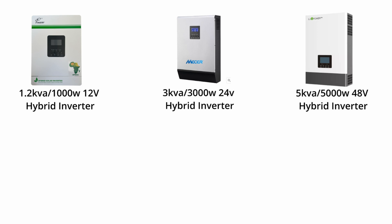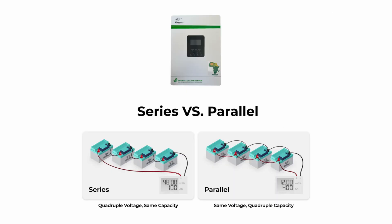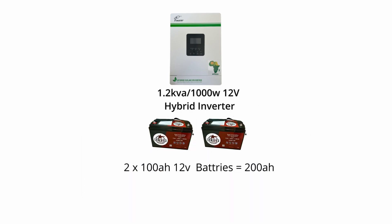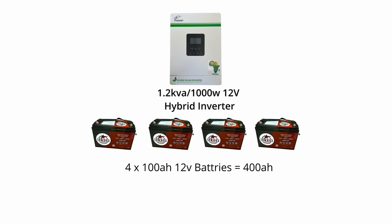Batteries connected in series: if you take four batteries and connect them in series, your voltage would be 48 volts, whereas if they were 100 amp hours you'd still have 100 amp hours. With batteries connected in parallel, if you've got four 12 volt 100 amp hour batteries you'd end up with 400 amp hours. For example, a 1000 watt 12 volt inverter connected to 200 amp hour 12 volt batteries in parallel gives you 200 amp hours out, and 400 amp hour batteries gives you 400 amp hours out.